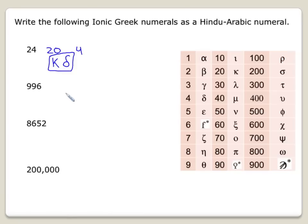996. So we have 900 right here, which is sampi. 90 right here, which was our coppa. And then 6 is right here, and that is our digamma. So this one was using all Phoenician letters here.